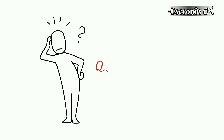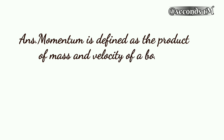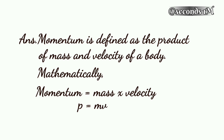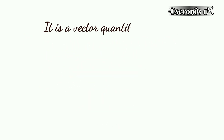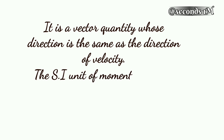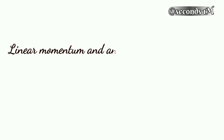Momentum is defined as the product of mass and velocity of a body. Mathematically, momentum equals mass into velocity, or p = mv. It is a vector quantity whose direction is the same as the direction of velocity. The SI unit of momentum is kg meter per second, and it is denoted by P.